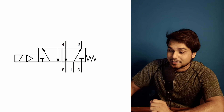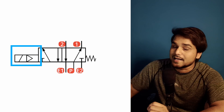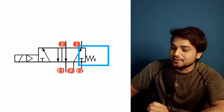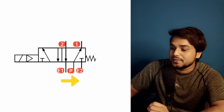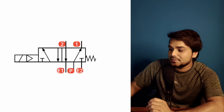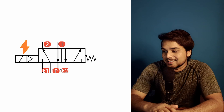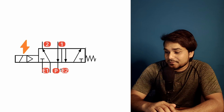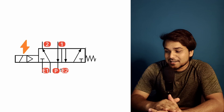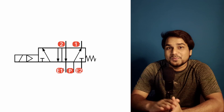In a 5/2 single coil solenoid valve, there is a solenoid only on one side and a spring return on the other. By default the valve spool shifts to the spring side, supplying air to port 1. It won't change position unless an electrical signal is supplied to the solenoid — but that signal must be kept continuous, otherwise the valve returns to the default position due to the spring return. This consumes more electrical energy, but saves one PLC output since there is only one solenoid.